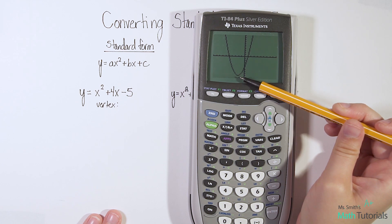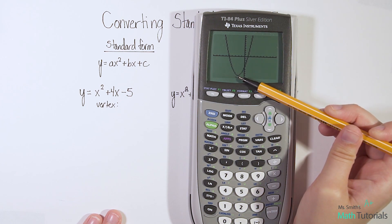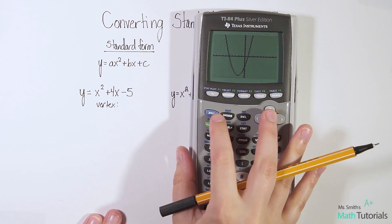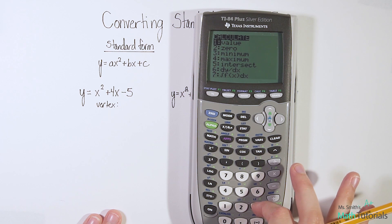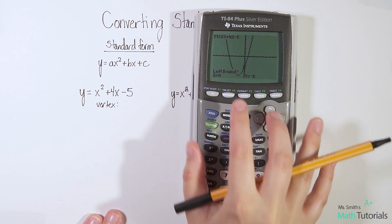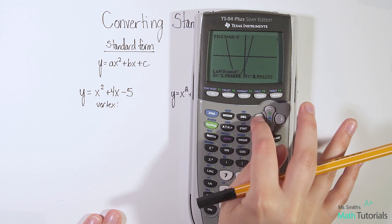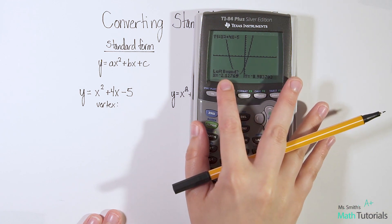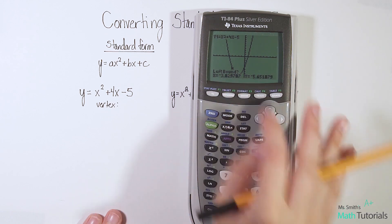We'll look at another one in a minute that's a maximum. It's second trace, minimum, three. And this little blinking spaceship shows up. It says left bound, so we want to take it a little bit left of the vertex, to about right there, lock it in.